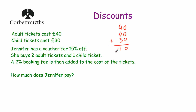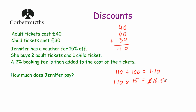Jennifer has a voucher for 15% off, so let's work out 15% of £110 and take it away. Using a calculator, divide by 100 to find 1%: £110 ÷ 100 = £1.10. Then multiply by 15 to find 15%: £1.10 × 15 = £16.50. The voucher saves Jennifer £16.50. So: £110 take away £16.50 = £93.50. Rather than paying £110, Jennifer only has to pay £93.50.